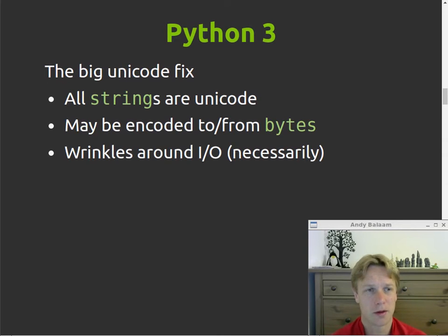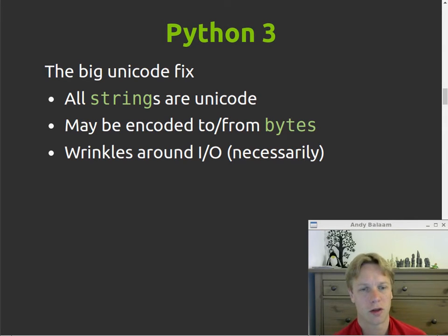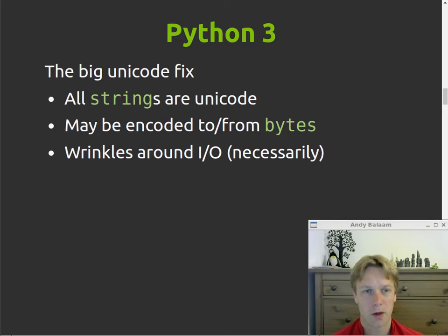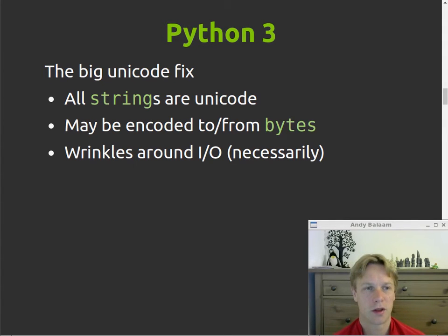So, what about Python 3? One of the big things that happened in Python 3 was the big Unicode fix. Previously in Python, strings were not Unicode by default — you had to use a special Unicode string. But now everyone knows Unicode is the answer to everything to do with strings. So if you make an object of type string in Python 3, it is a Unicode string, which you can encode to or from bytes. You need to do that to communicate with the outside world — for example, to read from a file, that file is written to the disk in bytes, and then you convert it into a Unicode string based on the encoding you think that file has, such as UTF-8.